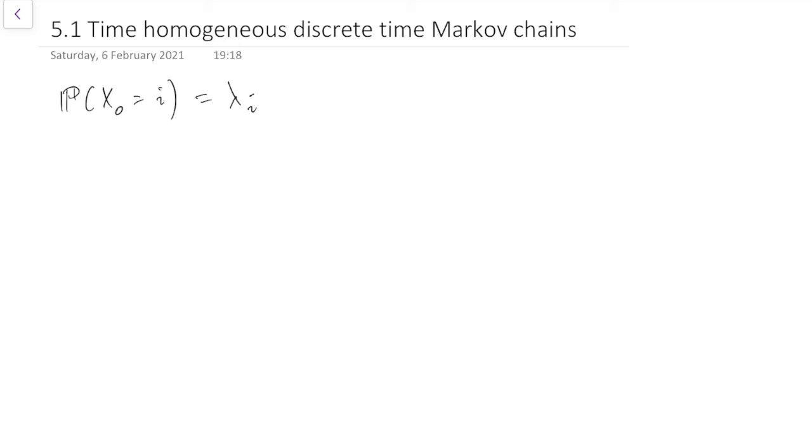But we could be picking the beginning state x0 according to any odd distribution, lambda. So that's the initial distribution.